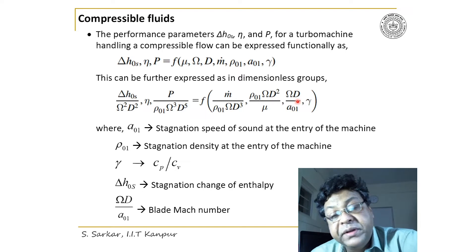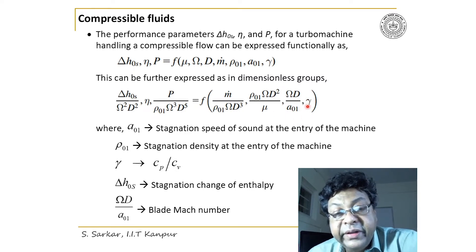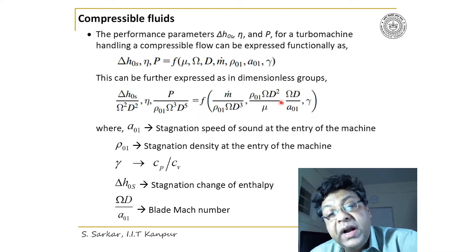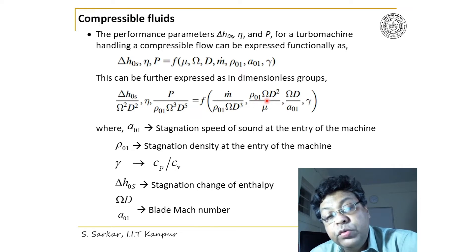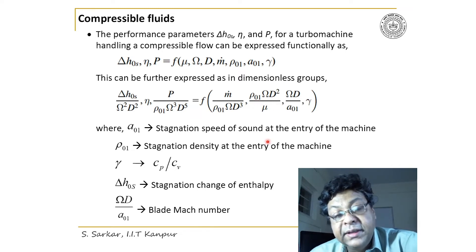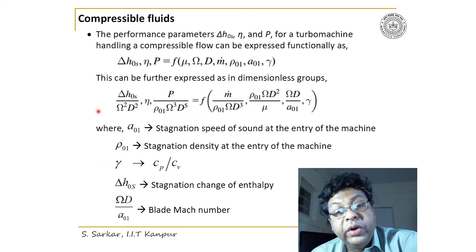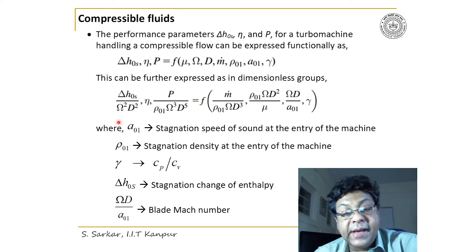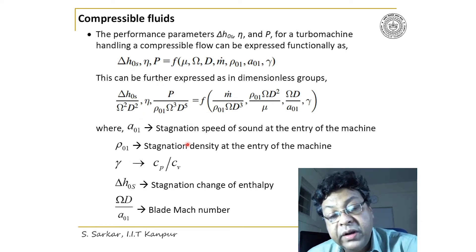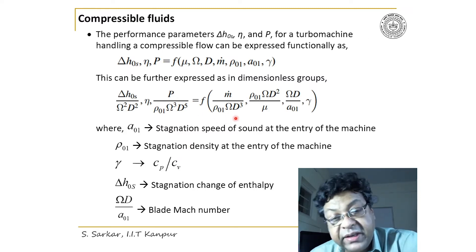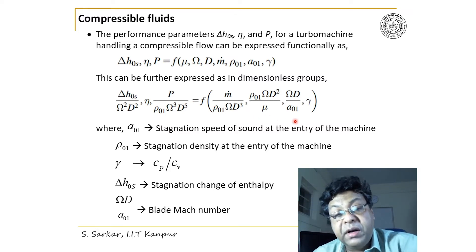ωD represents the blade speed, so ωD/a01 is the blade Mach number. Similarly, ρ01·u·D/μ is the form of the Reynolds number. The first term — the non-dimensional mass flow rate — is called the capacity of the machine. So the non-dimensional enthalpy rise ξ, efficiency η, and power coefficient are functions of capacity, Reynolds number, blade Mach number, and γ.